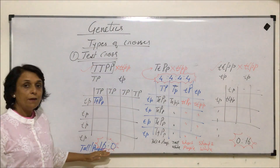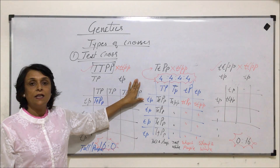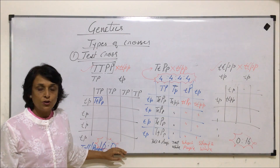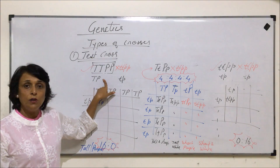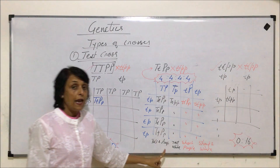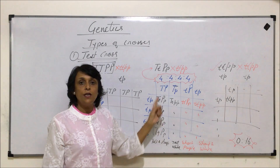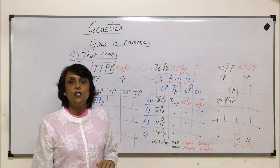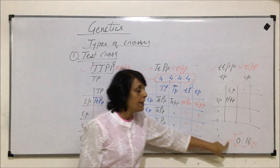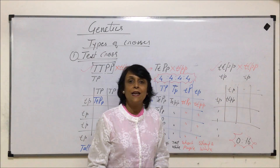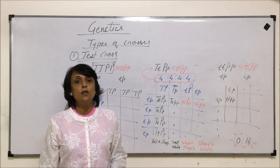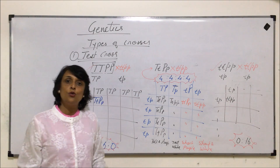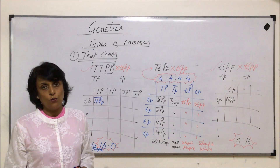Just a recap: we started with known genotypes to understand the dihybrid test cross. But if a question says the ratio in a dihybrid test cross is 16 is to zero, the unknown is homozygous dominant for both traits. If the ratio is four is to four is to four is to four, the unknown is heterozygous for both. If we get zero is to 16, the unknown is homozygous recessive. This covers ratios for both monohybrid and dihybrid test crosses.